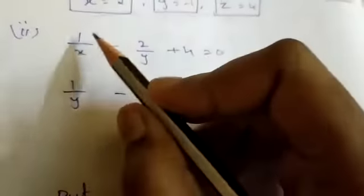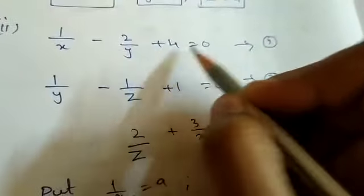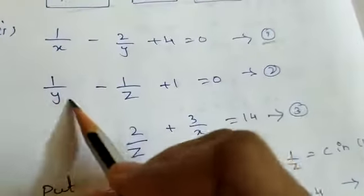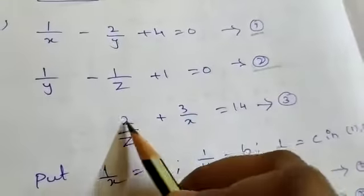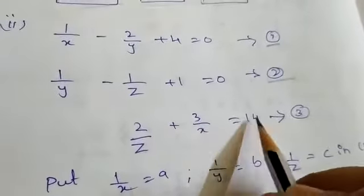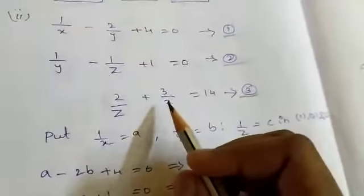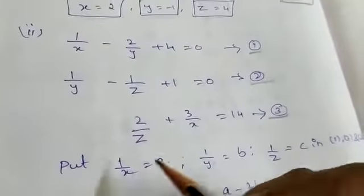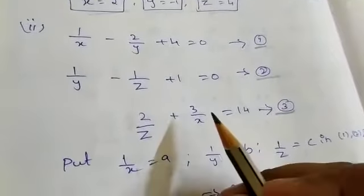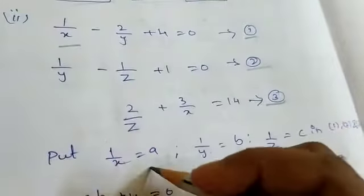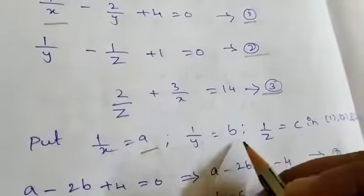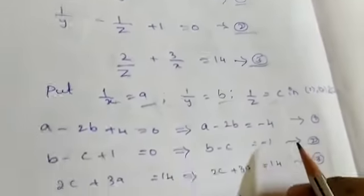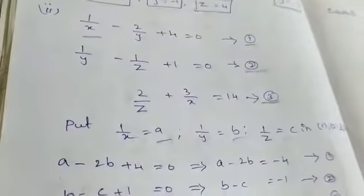The second part of question 1 is: 1 by x minus 2 by y plus 4 equal to 0 (equation 1); 1 by y minus 1 by z plus 1 equal to 0 (equation 2); 2 by z plus 3 by x equal to 14 (equation 3). We substitute 1 by x as A, 1 by y as B, and 1 by z as C in all equations.